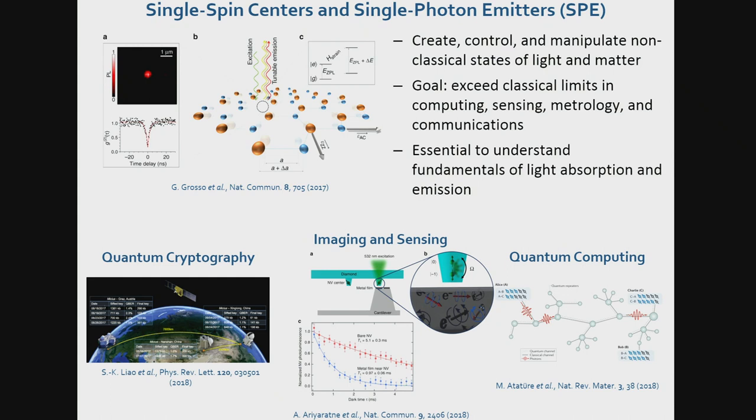So, just to elaborate a bit on the importance of this, if you actually have access to such single spin centers or single photon sources, you can create, control, manipulate non-classical states of light and matter, and that will really enable us to go beyond classical limits, not just in computing, but also in quantum information science, for instance, with quantum cryptography. And another very interesting application is actually to do extremely sensitive imaging and sensing.